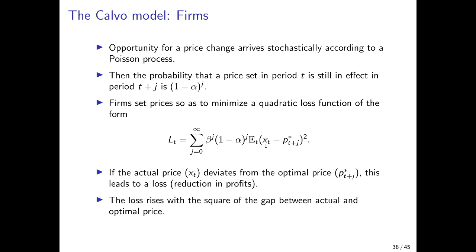At time t, when the firm sets the price x_t, it does not have information on periods beyond t. So we apply the expectations operator to the deviation of the actual price today and the optimal price in period t+j. The firm discounts the future with a discount factor beta raised to the power of j, and the sum goes over all periods from t to t+j. The factor beta^j becomes smaller the further into the future we go. The term (1 - alpha)^j is the probability that the price set at t is still in effect j periods later. If the actual price deviates from the optimal price, this leads to a loss that rises with the square of the gap — and that's what the firm wants to minimize.